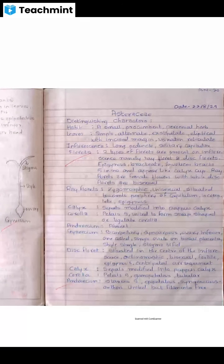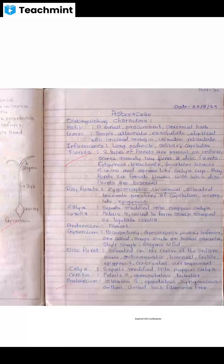Androecium is absent in ray florets. Gynoecium: bicarpellary, syncarpous, ovary inferior, one-celled with a single ovule on basal placentation. Style single, stigma bifid.